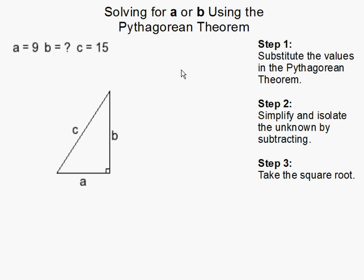Solving for A or B using the Pythagorean Theorem. In this round, we have a right triangle, and we are to solve for the missing side, which is B.